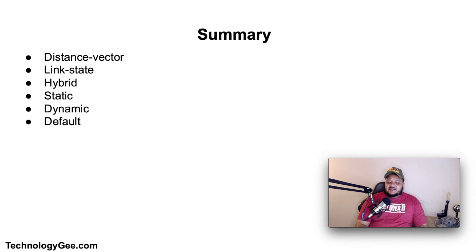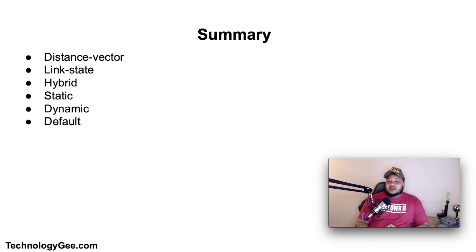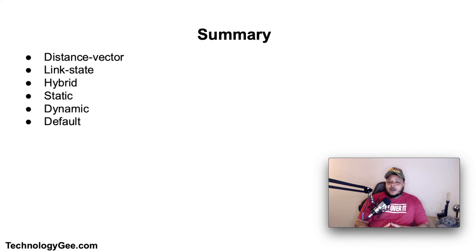In summary, we have talked about various routing protocols such as distance vector, link state, hybrid, static, dynamic, and default routing protocols. If you felt like you've gotten something valuable out of this information, go ahead and hit the like, share, and drop a comment — but most importantly, subscribe to this channel. Also go check out my website Technology G so that you can get read up on the latest and greatest to help you successfully pass the CompTIA Network Plus N10-007 certification. Until next video, ladies and gentlemen, peace.